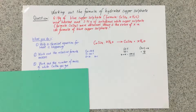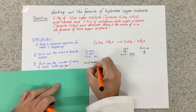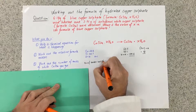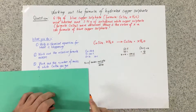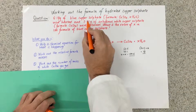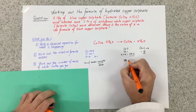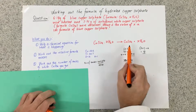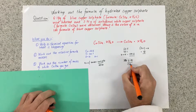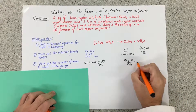Part three: work out the number of moles of white copper sulphate that you've got. To do this, you need to use the equation: number of moles is the weight you got divided by the relative formula mass. So to work out the number of moles of white copper sulphate, we use the weight that we got, which is 3.91, divided by the relative formula mass of the copper sulphate, which is 159.6. Put in the calculator — the number of moles of white copper sulphate is 0.0245.